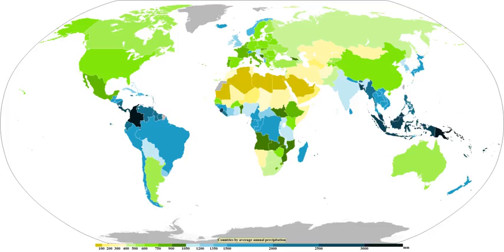However, if the sub-freezing layer beneath the warm layer is too small, the precipitation will not have time to re-freeze, and freezing rain will be the result at the surface. A temperature profile showing a warm layer above the ground is most likely to be found in advance of a warm front during the cold season, but can occasionally be found behind a passing cold front.